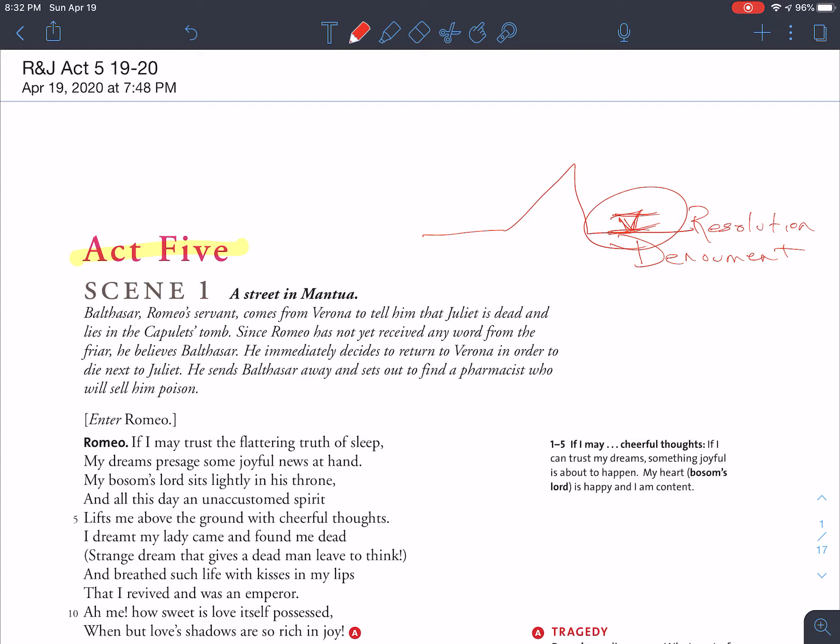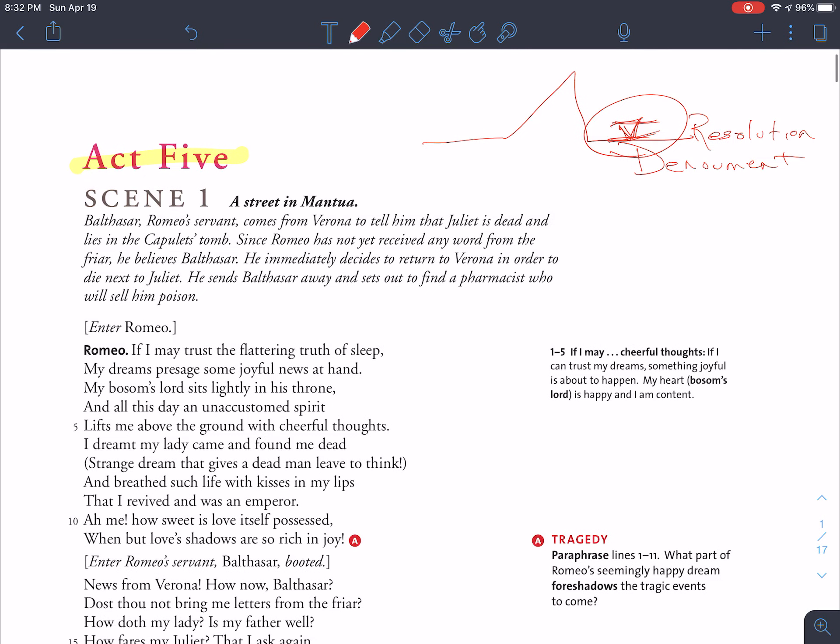In the beginning of this act, we see an ironic opening where Romeo is actually joyful because his dreams gave him something positive to think about. But notice what he says here.